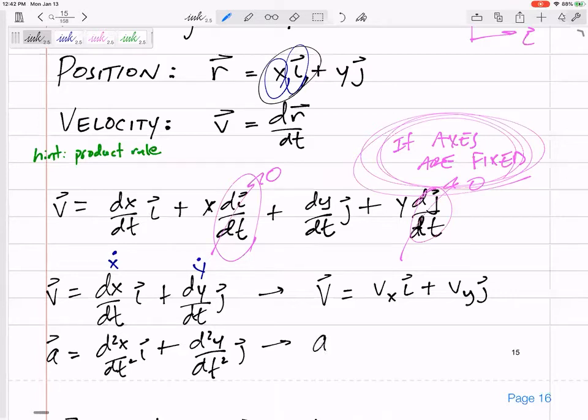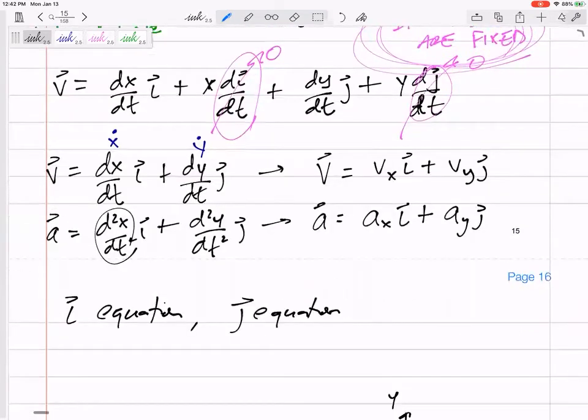It's the same thing with acceleration. This would be the acceleration in the X, and the acceleration in the Y. So when you have i's and j's, I like to think of these as two separate equations, your i equation and your j equation.